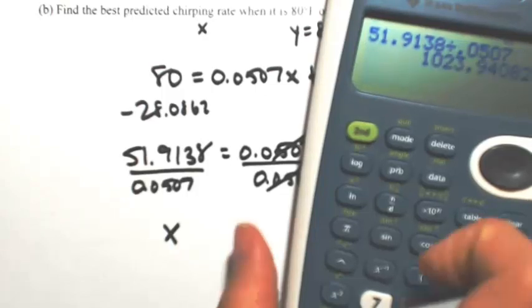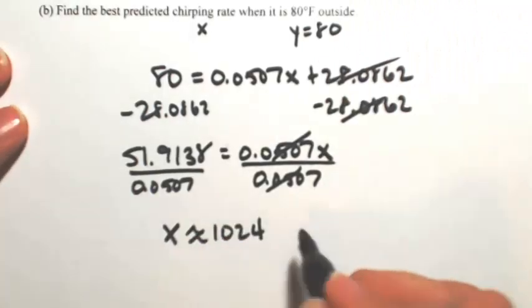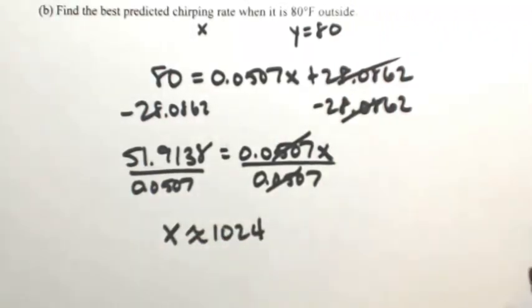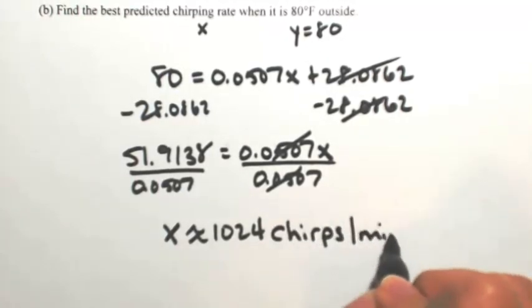So we're looking at about 1,024. Always keep in mind the units, so this is chirps per minute.